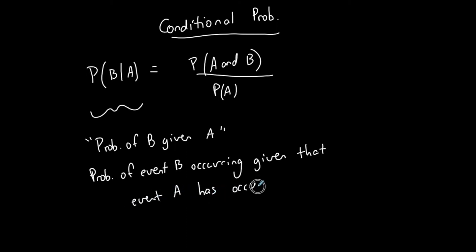So conditional probability is the probability that some event occurs based on the fact that another event has already occurred. That changes some things. When using the formula, the probability of B given A — the part after the vertical line — this vertical line is read as 'given.'